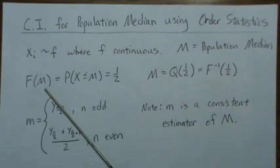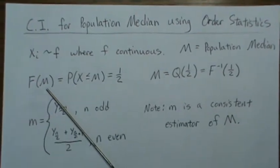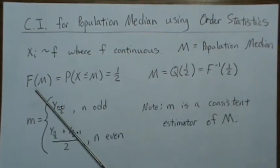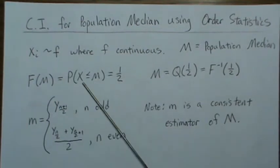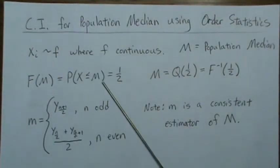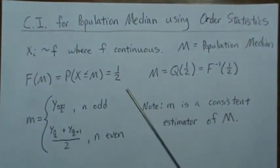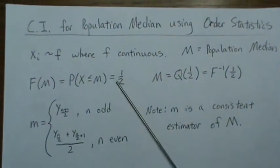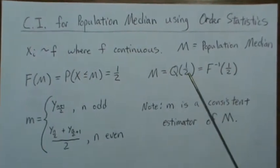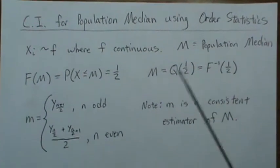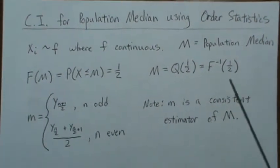So because M, capital M, is the median of the CDF, F(M) which is the probability of X being less than M is one half. And then if we take F inverse to both sides we get what's called the quantile function. So M is the quantile of one half which is the same as F inverse of one half.